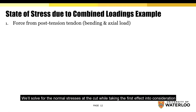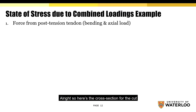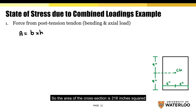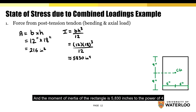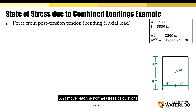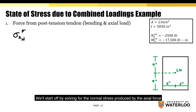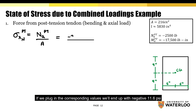On this slide we'll solve for the normal stresses at the cut while taking the first effect into consideration. Here's the cross-section at the cut. The area of the cross-section is 216 square inches and the moment of inertia of the rectangle is 5830 inches to the fourth power. Using these values along with the previously solved internal forces, the normal stress produced by the axial force is negative 11.6 psi.